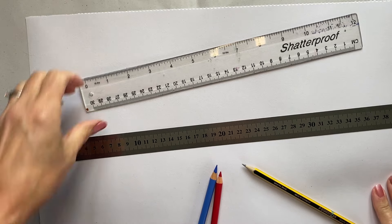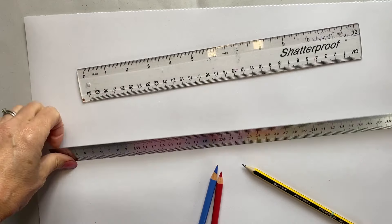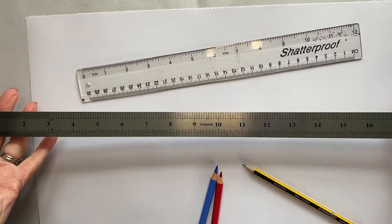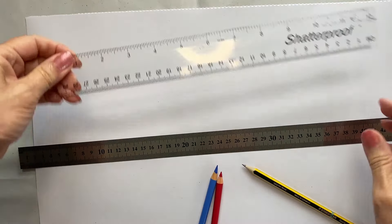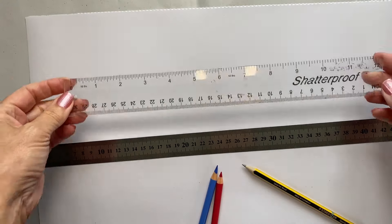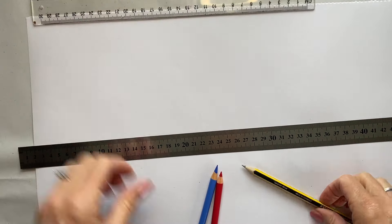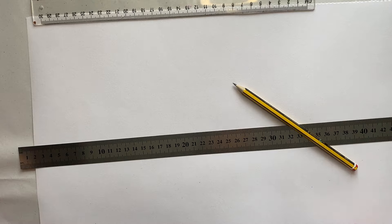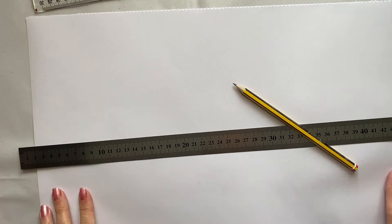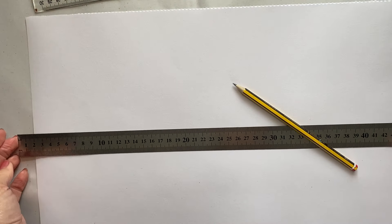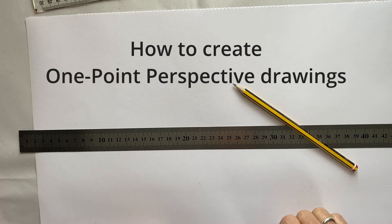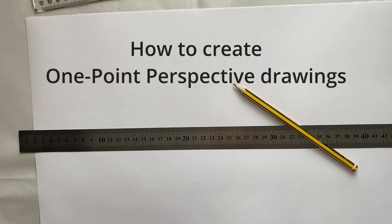What you're going to need is a ruler. I've got a 45 centimeter, that's an 18 inch ruler, but a 12 inch or 30 centimeter ruler is fine. You're also going to need a pencil, and that's all we're going to use for this first part on how to create one point perspective in your drawings.